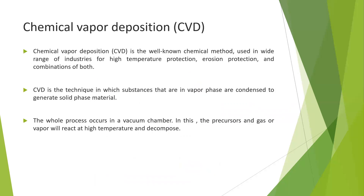Coming to the chemical vapor deposition method, it is a chemical method which is widely used in industries for high temperature protection and erosion protection. It is a technique in which substances that are in vapor phase are condensed to generate solid phase material. The whole process occurs in a vacuum chamber where precursors in gas or vapor phase react at high temperature, then decompose and finally form nanomaterials.